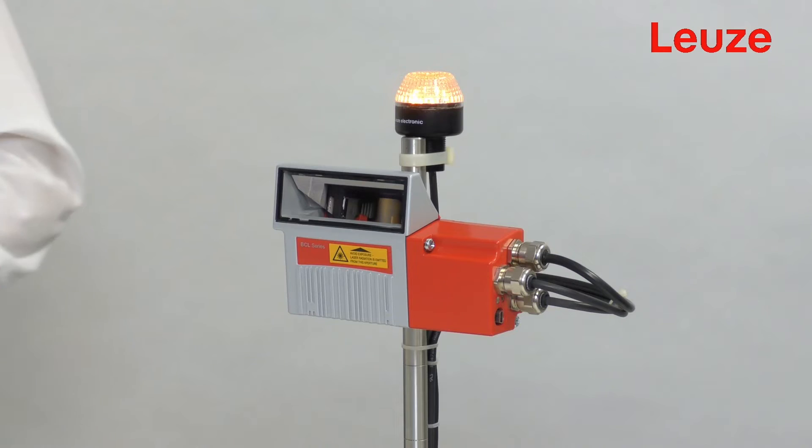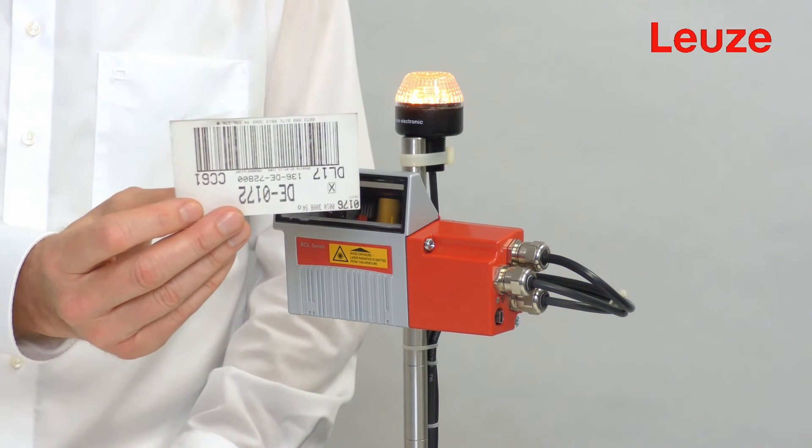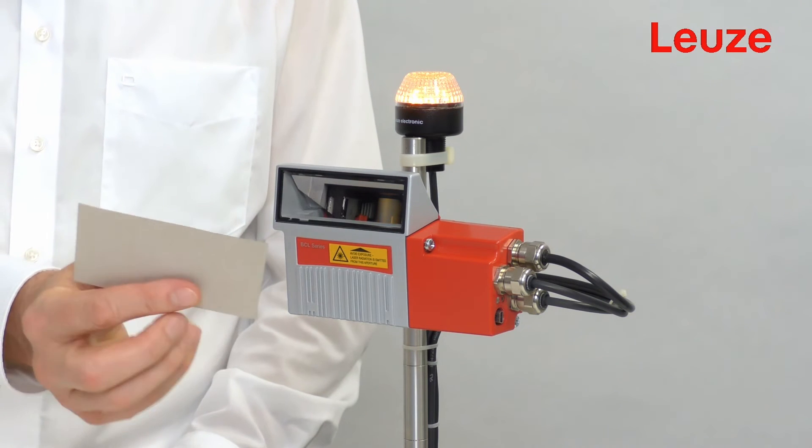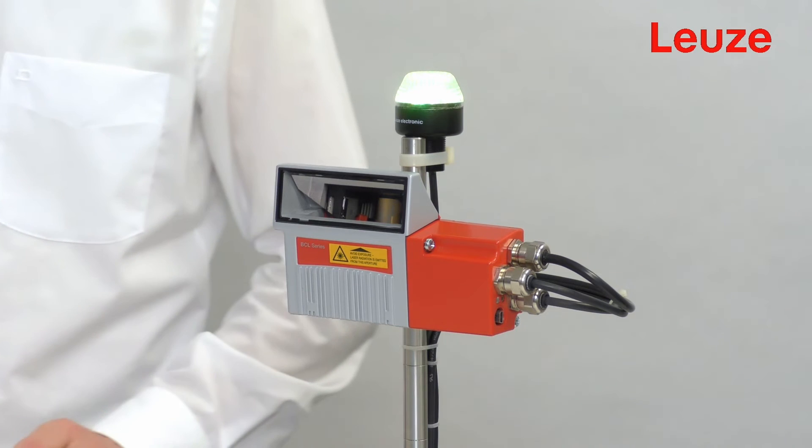Here we have another such case. This code is also not up to standard. The code is very poorly printed and the bars have very little contrast. We pass it through the reading field. And here, too, it is correctly decoded.